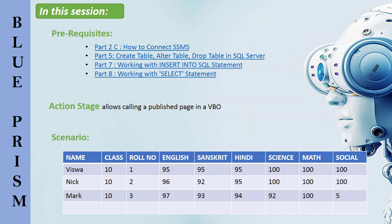Now we have a scenario. I have a table called Student Marks containing name, class, roll number, and subjects. I've entered some student data based on their class and roll number, along with the marks they received. In this session, we're going to insert data into SQL Server Management Studio, retrieve it in our business process, manipulate it, and show results based on the sum of marks each student has scored.